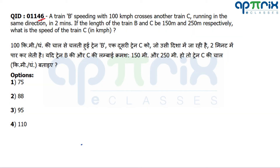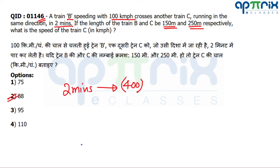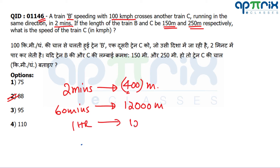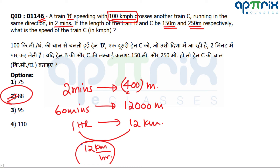Question number 1146: Train B is traveling at 100 km/h and crossing another train running in the same direction in 2 minutes. The lengths of the trains are 150 m and 250 m. The total distance covered when overtaking is 400 m. In 2 minutes, 400 m is covered, so in 60 minutes that is 12,000 m = 12 km/h relative speed. Since both are in the same direction and one is 100 km/h, train C must be traveling at 88 km/h.